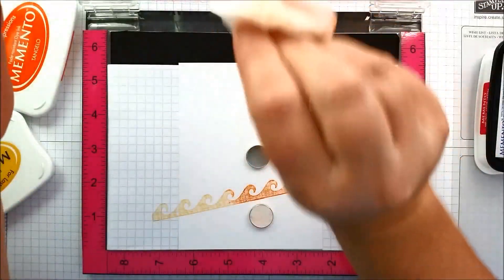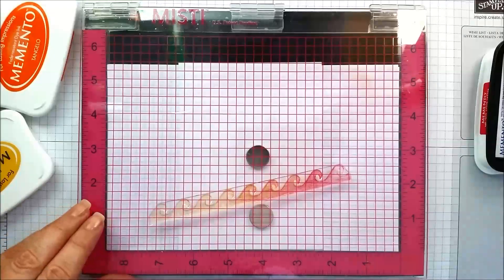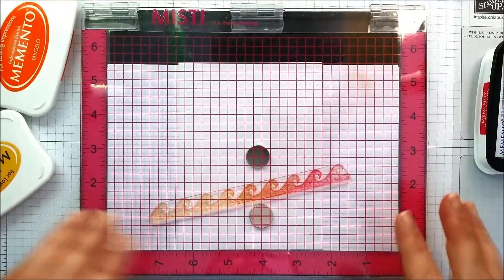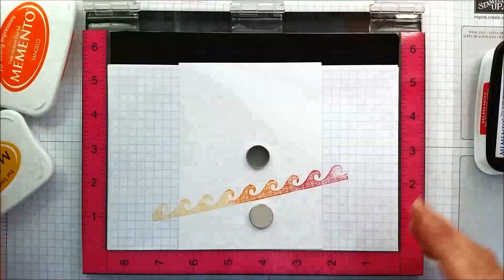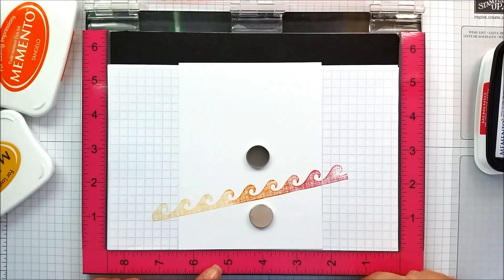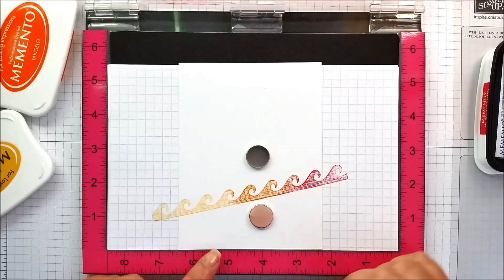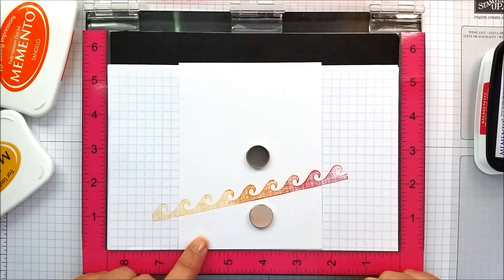I'm going to take my wipe and just take off some of the end ink. And voila, you now have a multicolored wave. Isn't that cool? I'm going to go ahead and stamp this wave a few more times increasing up.